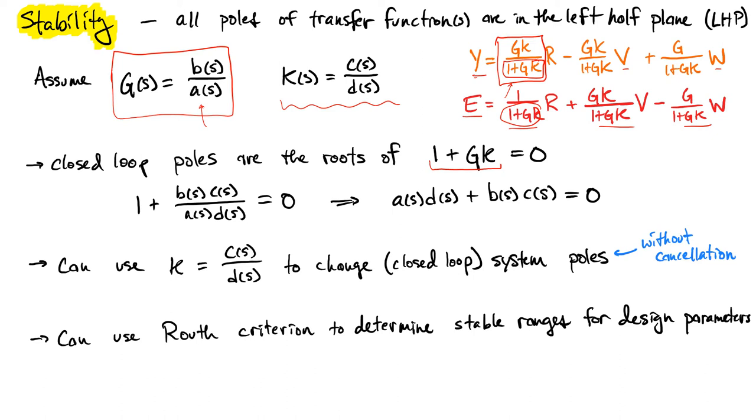If similarly we say that the controller is a transfer function with polynomial c in the numerator and d in the denominator, then if we substitute in, we get b(s)/a(s) multiplied by c(s)/d(s). And if we multiply both sides by that denominator, we get a(s)d(s) + b(s)c(s) = 0. There's not a whole lot to be said because we haven't specified what any of these polynomials are.